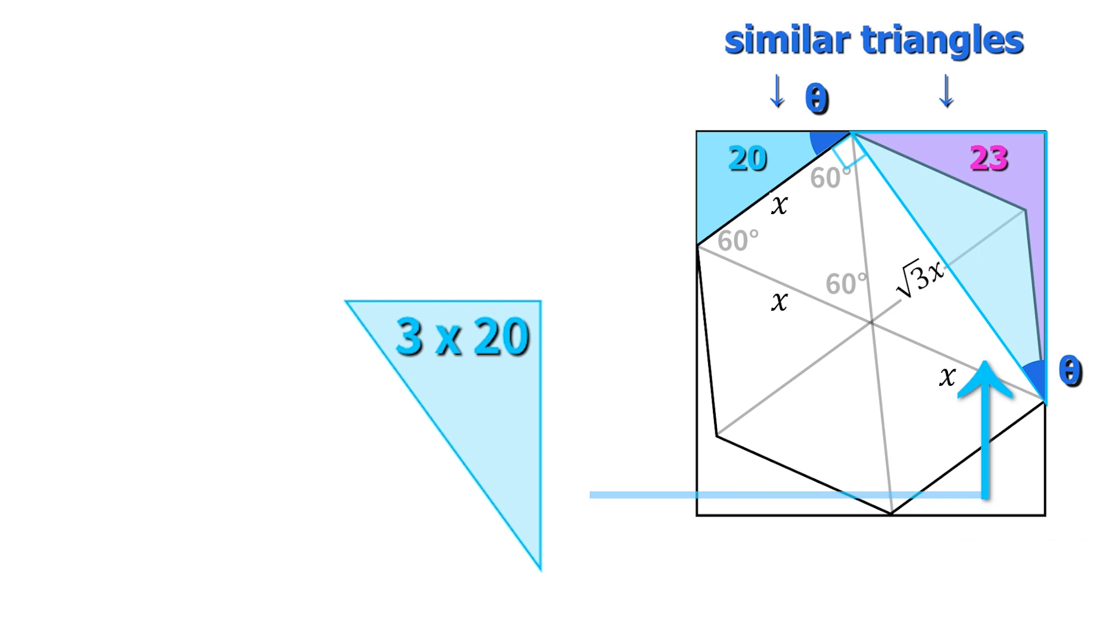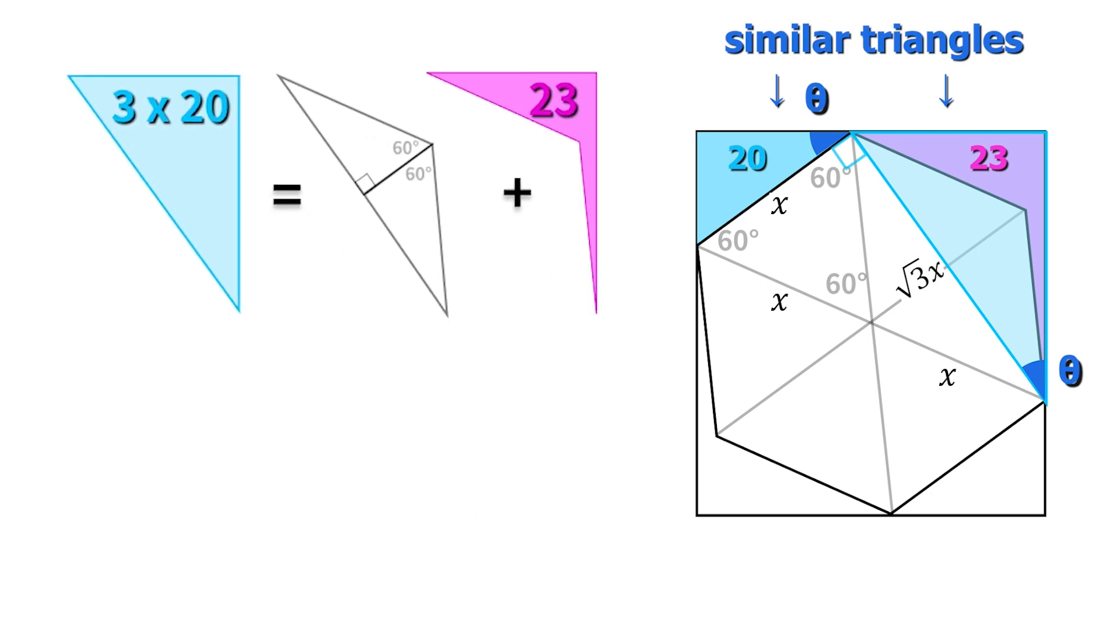So after identifying those similar triangles, I think we've really broken the back of this problem. From there what we can do is subtract the 23, the pink area, from our 60 to get that this remaining area must be 37 square centimeters.